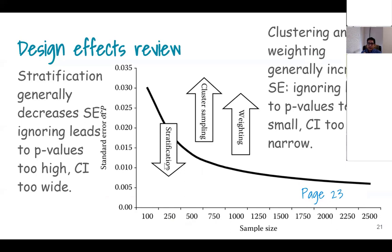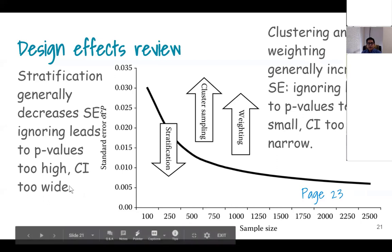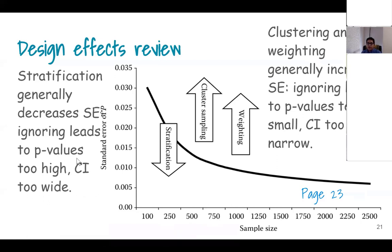Stratification generally decreases the standard error. If you still use SRS-based methods to calculate standard errors and p-values, you will generally get p-values that are too high and confidence intervals that are too wide — this is essentially giving you wrong results.